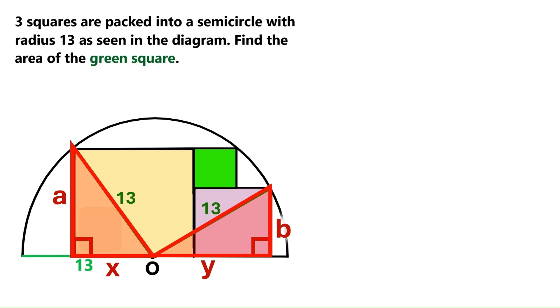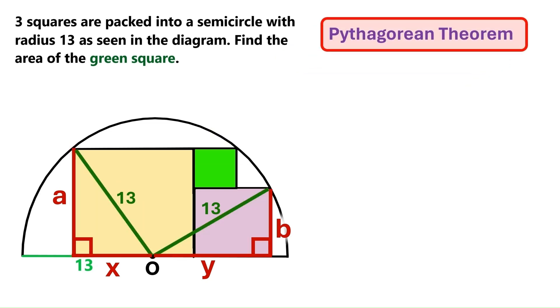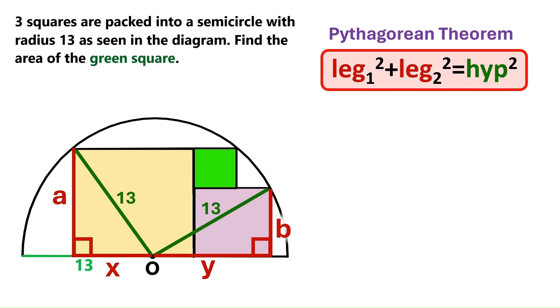We've now got two right triangles, so we can apply the Pythagorean theorem, which states that the sum of the squares of a right triangle's shorter sides, called legs, equals the square of its longer side, known as the hypotenuse.